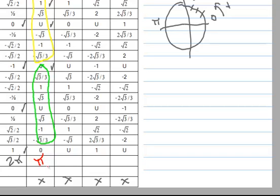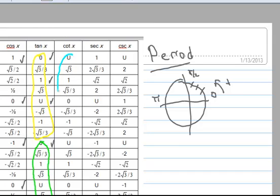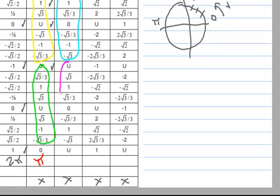Now let's look at the cotangent, and you're going to see a similar pattern. It starts at undefined from 0 to pi, and then if you analyze from pi up to but not including 2 pi, you'll notice those are also a repeat. So the same logic for the period of tangent also holds for cotangent — the period of the cotangent is also pi.